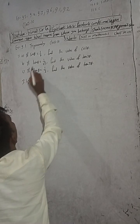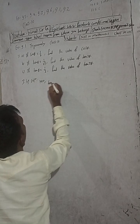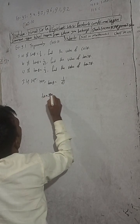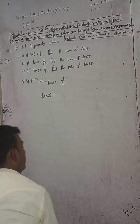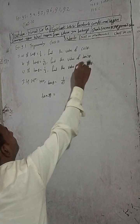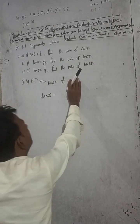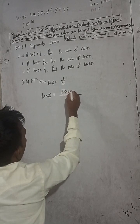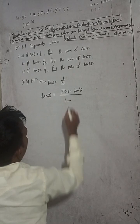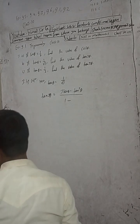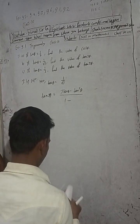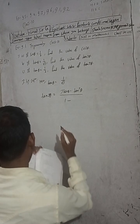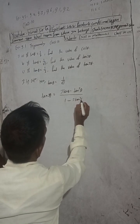We now have a new question. If tan theta is equal to 1 by 2, find tan 3 theta. First check your book for the formula. The formula of tan 3 theta is: 3 tan theta minus tan cubed theta, divided by 1 minus 3 tan squared theta.